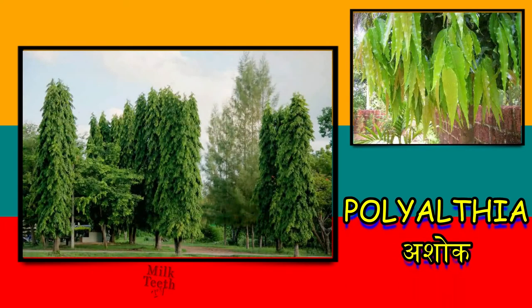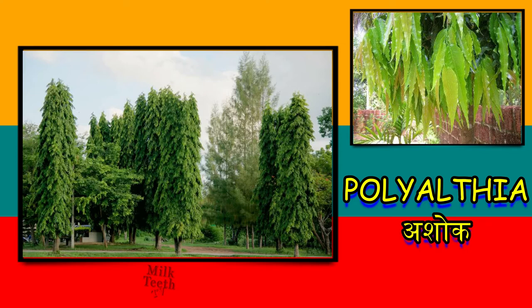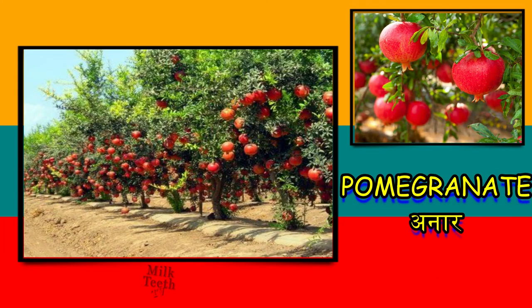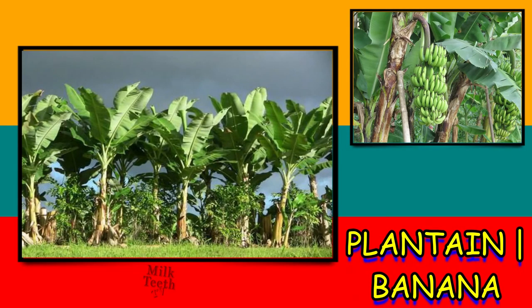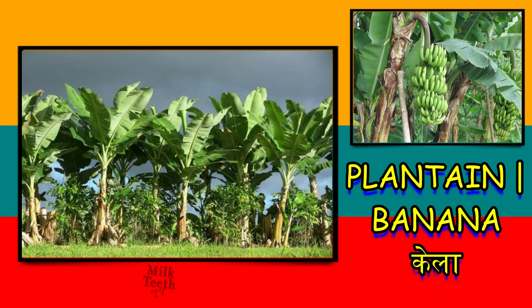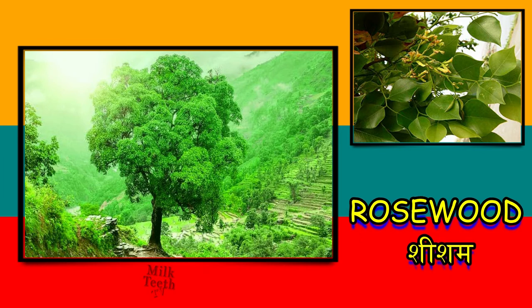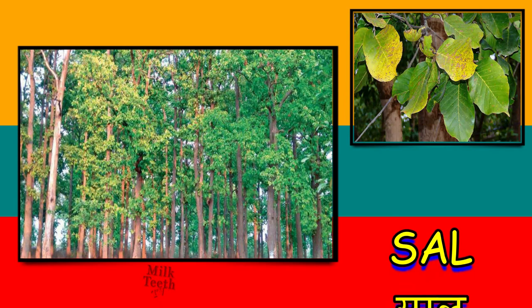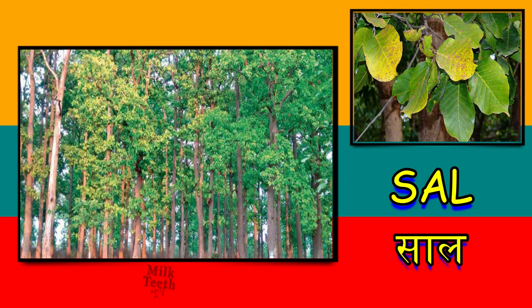Polyalthea tree. Hindi mein ise kehte hain ashok ka pedo. This is pomegranate tree. Hindi mein ise kehte hain anaar ka pedo. This is plantain tree, also known as banana tree. Hindi mein se kehte hain kele ka pedo. Rosewood tree. In Hindi we call it shisham ka pedo. It is a very important timber plant. Sal tree. In Hindi we call it saal ka pedo. It is also another important timber tree.